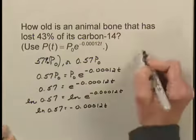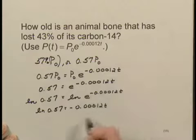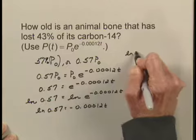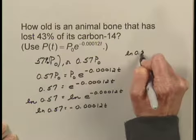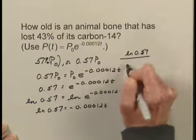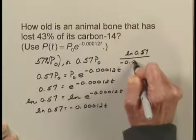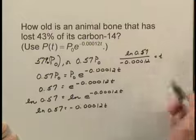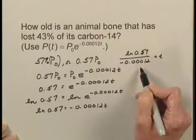If I divide both sides of this equation by the coefficient of t, I get that ln(0.57) divided by -0.00012 equals t. When I do this computation on a calculator,